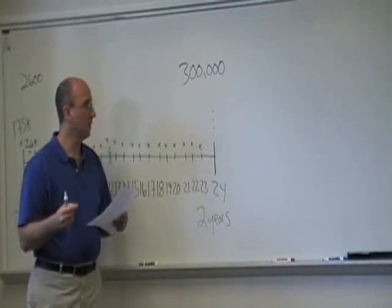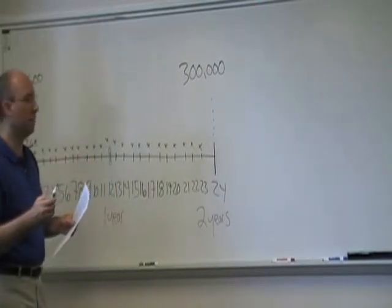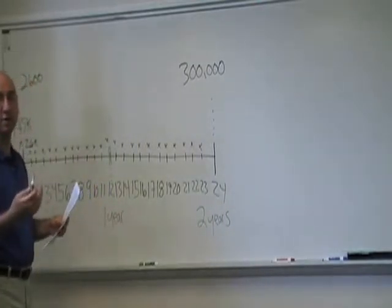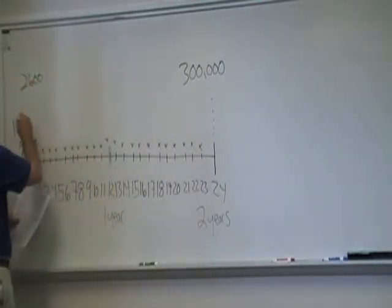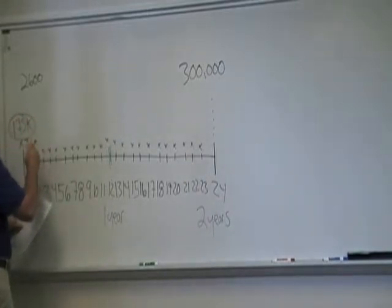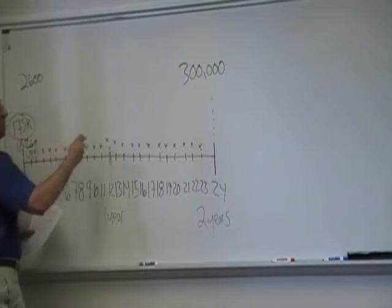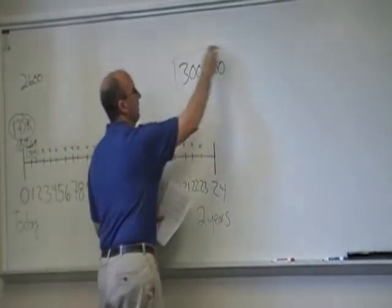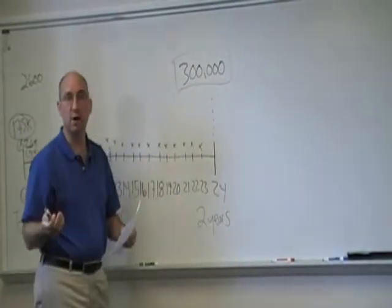What we want to know is what is the rate of return that she needs to earn each month so that the $175,000 plus the present value of all of these $2,600, when you add them all up, gets her $300,000.